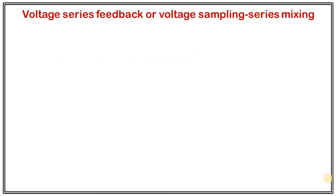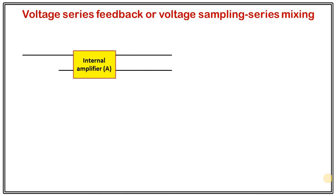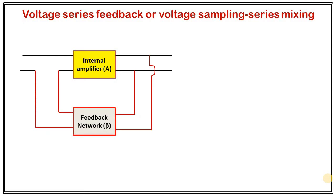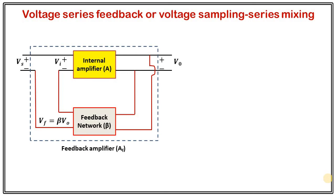The first topology is voltage series feedback. Here you can see the internal amplifier with the feedback network connected. At the output terminal, the feedback network is connected in parallel or shunt configuration — that means this is voltage sampling. The potential drop across two points is always the same, so the output voltage is taken between two terminals and from exactly those same terminals we take the feedback signal, meaning we are sampling the same voltage. At the input terminal, the circuit is connected in series configuration — hence voltage series feedback, or voltage sampling series mixing.